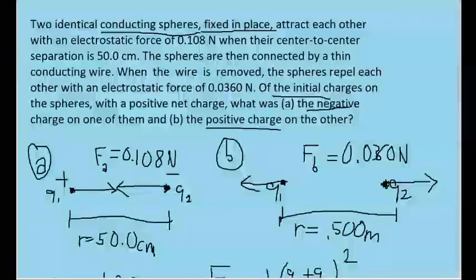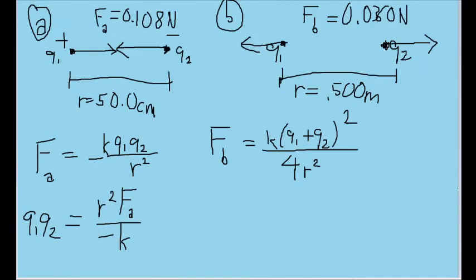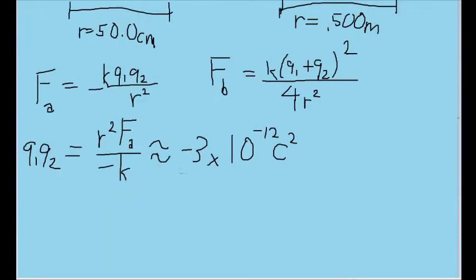Now we can plug in our values for this in SI units. For R squared, we'll use 0.5 meters squared. For F sub A, we use 0.108 Newtons. And for K, the Coulomb constant, we use 8.99 times 10 to the ninth power Newton meter squared per Coulomb squared. This value is approximately negative three times 10 to the negative 12 Coulomb squared. Of course, there are more significant digits than this. I'm only writing it with one significant figure so that it's easier to read and simpler to keep track of. But remember that when you're actually performing the problem, be sure to preserve the exact value of this in your calculator so that we can use it for later.